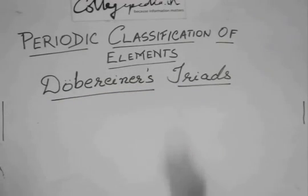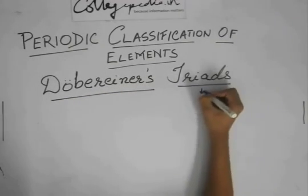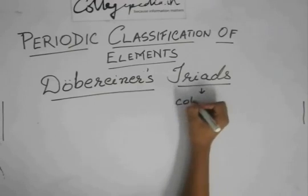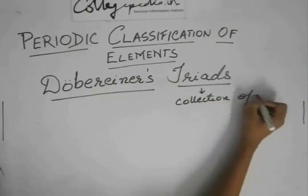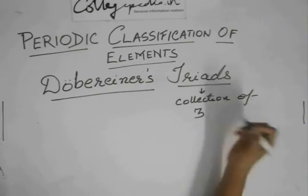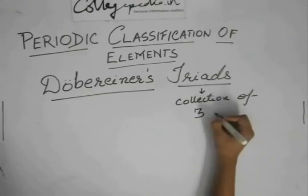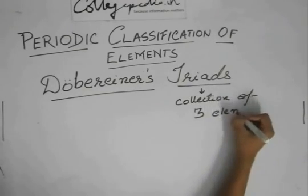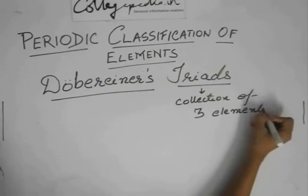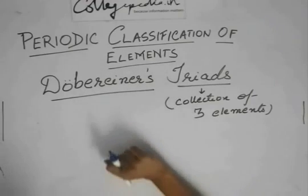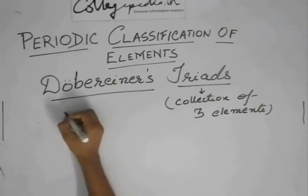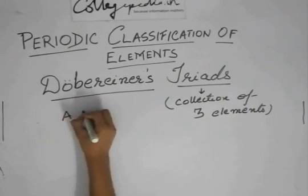Now triads are basically a collection of three objects or things, or in this case, elements. So he took three elements, let's say he took A, B, C.